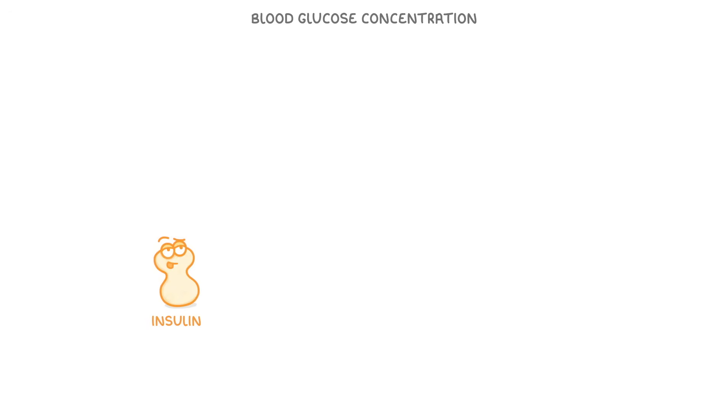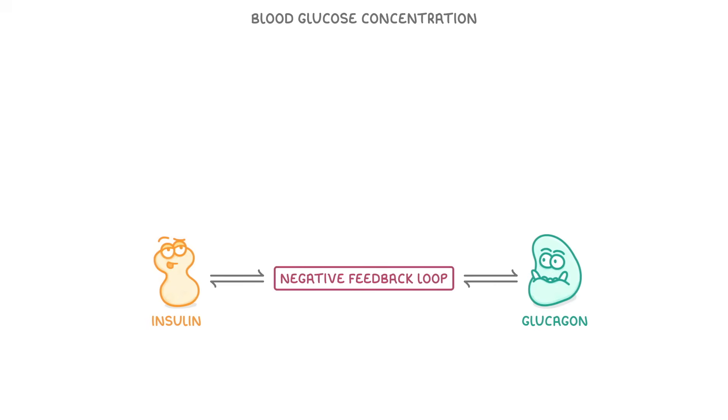In this video we're going to explore how our blood glucose concentration is controlled by the hormones insulin and glucagon, and at the end we'll see how these fit together in a negative feedback loop.